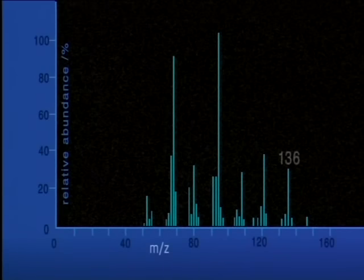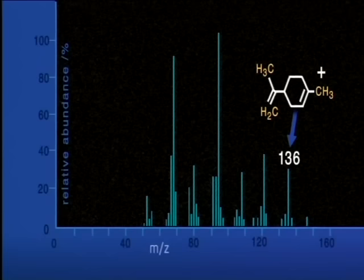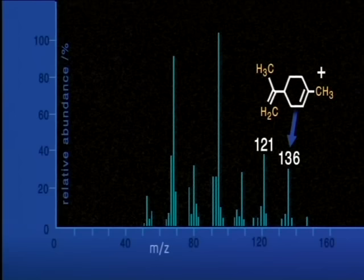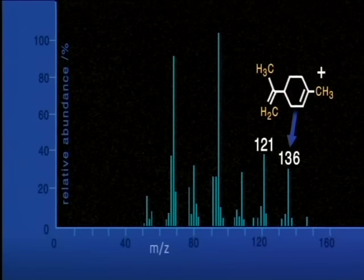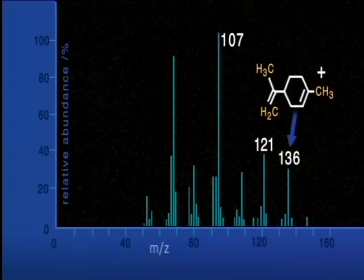The peak at 136 units represents the parent ion — the whole molecule that has lost an electron. The peak at mass 121 units, 136 minus 15, is the parent ion from which one of the CH3 groups, relative molecular mass 15, has broken off in the ionization chamber. And the peak at mass 107, 121 minus 14, could be formed by further loss of a CH2 group. Other peaks are caused by more complex breakdowns and rearrangements.